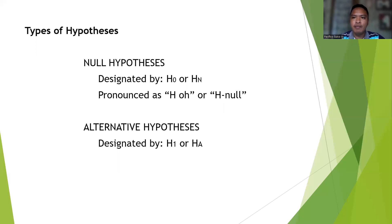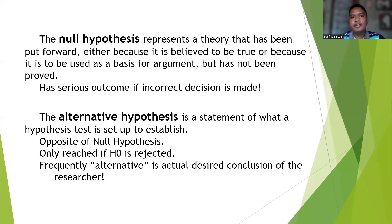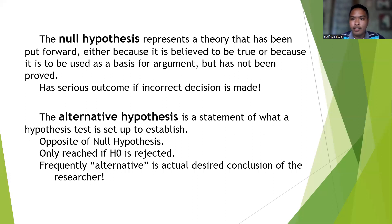We have the types of hypothesis: the null hypothesis and the alternative hypothesis. The null hypothesis is designated by H0 or HN, and the alternative hypothesis is designated by H1 or HA. The null hypothesis represents a theory that has been put forward, either because it is believed to be true or used as a basis for argument, but has not been proved, and has serious outcomes if an incorrect decision is made. The alternative hypothesis is a statement of what the hypothesis test is set up to establish — it is the opposite of the null hypothesis, and is reached only if the null hypothesis is rejected. Frequently, the alternative hypothesis is the actual desired conclusion of the researcher.